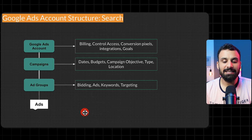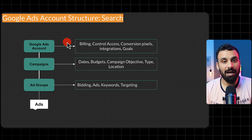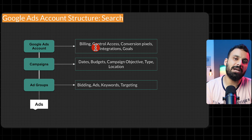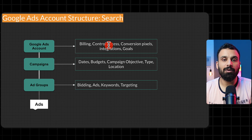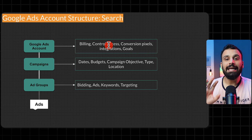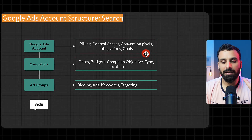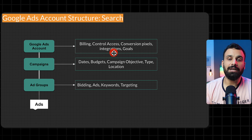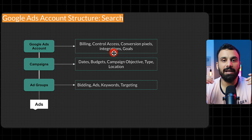At the account level you can control things like billing — any campaign will use the payment method added at account level. You can also control access: if you are working for an agency, you can add other people to the ad account, but a user is always added at account level. There are also conversion pixels and integrations like Google Analytics and Tag Manager, all done at account level.